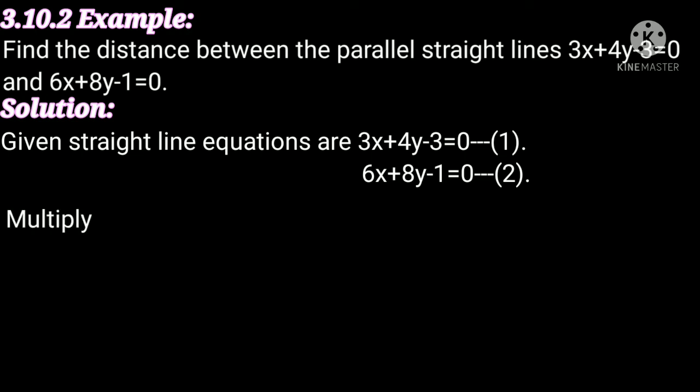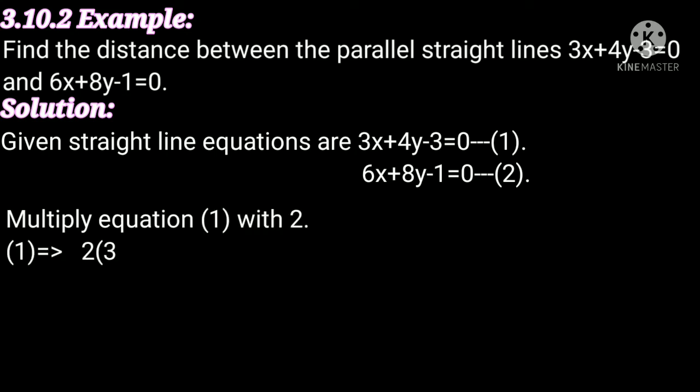Multiplying equation 1 by 2: 2 into (3x plus 4y minus 3) equal to 0, which gives 6x plus 8y minus 6 equal to 0. This is equation number 3.